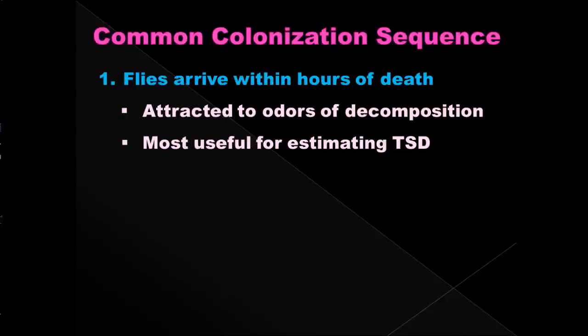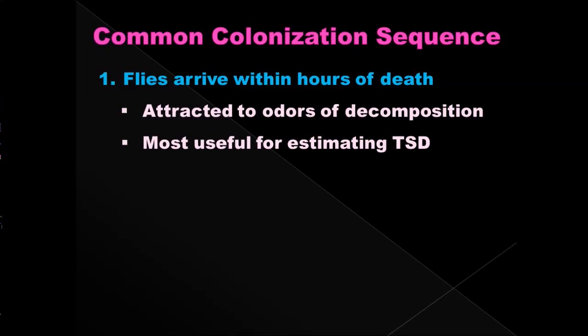Insects also follow a common colonization sequence, meaning they come to a body and start surviving on it in a certain set sequence. Flies are the first to arrive on a corpse because they're attracted to the odors of decomposition. They detect these odors and recognize a protein-rich source for their eggs to develop on. These fly development stages are the most useful for estimating time since death, or the post-mortem interval.